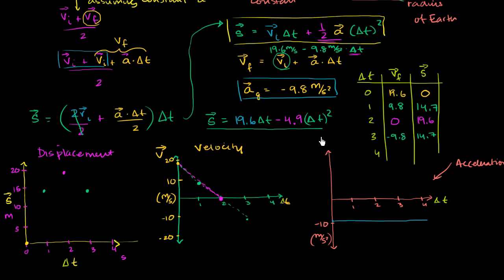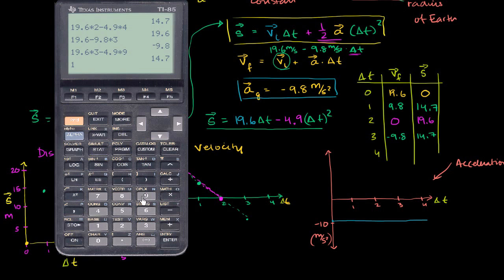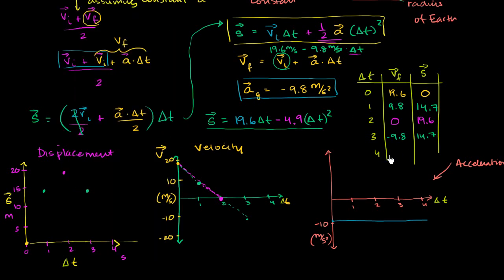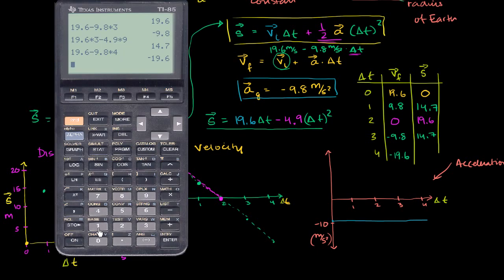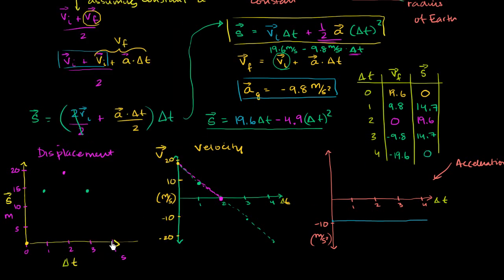After four seconds: velocity is 19.6 minus 9.8 times 4 equals negative 19.6 meters per second. The magnitude of our velocity is the same as when we initially threw the ball, except now it's going in the opposite direction — downwards. Displacement: 19.6 times 4 minus 4.9 times 16 equals 78.4 minus 78.4 equals zero. Our displacement is 0 — we are back on the ground.